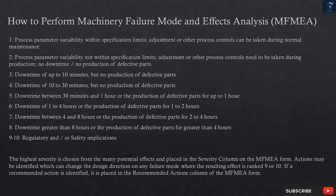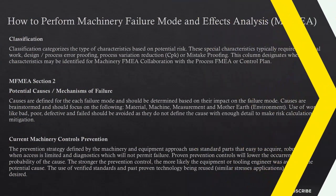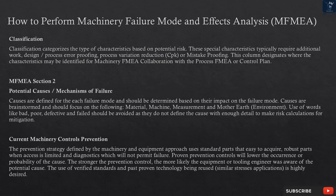Actions may be identified which can change the design direction on any failure mode where the resulting effect is ranked 9 or 10. If a recommended action is identified, it is placed in the recommended actions column of the MFMEA form. Classification categorizes the type of characteristics based on potential risk. These special characteristics typically require additional work, design/process error proofing, process variation reduction, CPK, or mistake proofing. This column designates where characteristics may be identified for MFMEA collaboration with the process FMEA or control plan.